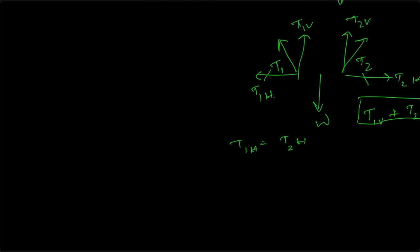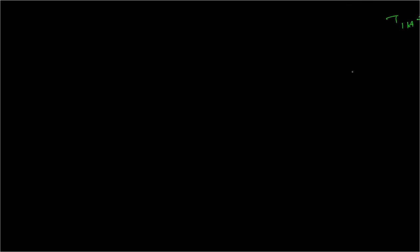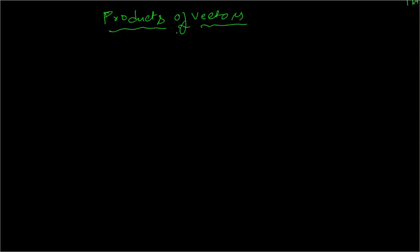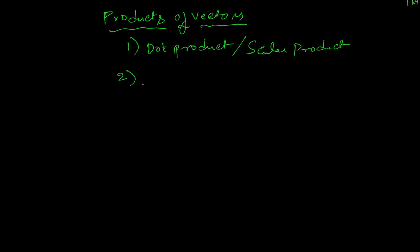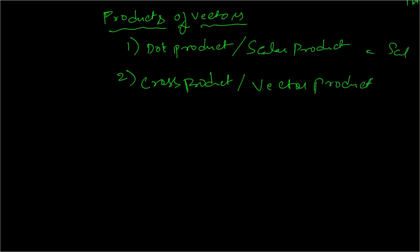We've now covered vector components and vector addition. Today we're also going to talk about vector products. There are two different types of multiplication for vectors: the first is called the dot product, also known as the scalar product, and the second is called the cross product, also known as the vector product. It's evident from the names that the dot product yields a scalar result and the cross product yields a vector result.